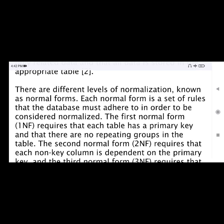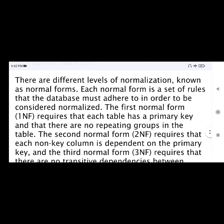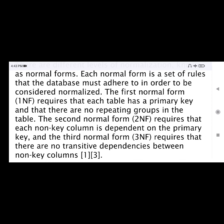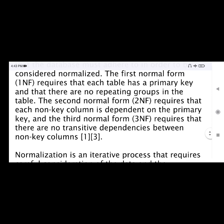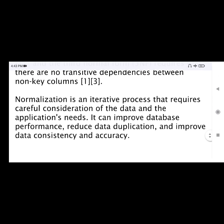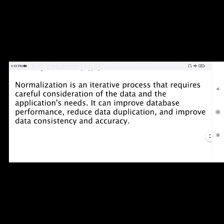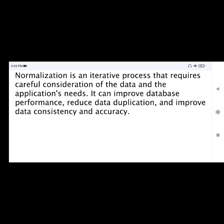There are different levels of normalization known as normal forms. Each normal form is a set of rules that a database must adhere to in order to be considered normalized. The First Normal Form (1NF) requires that each table has a primary key and that there are no repeating groups in the table. The Second Normal Form (2NF) requires that each non-key column is dependent on the primary key. The Third Normal Form (3NF) requires that there are no transitive dependencies between non-key columns. Normalization can improve database performance, reduce data duplication, and improve data consistency and accuracy.